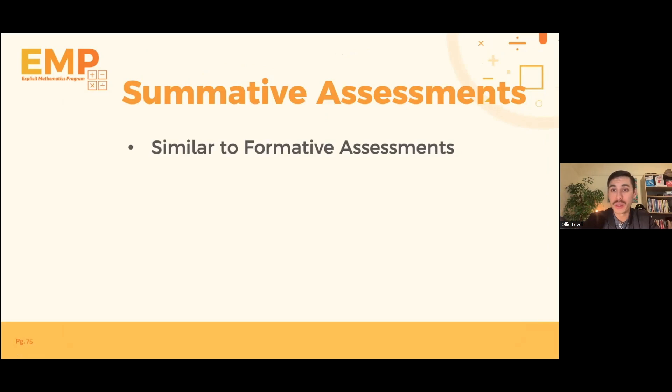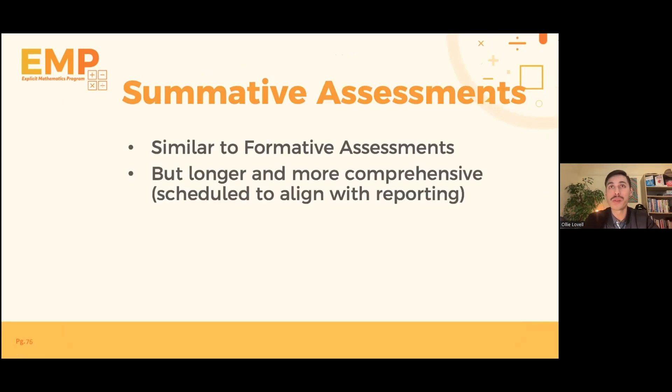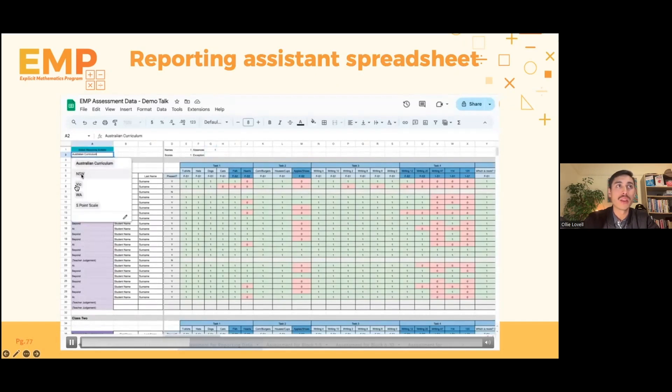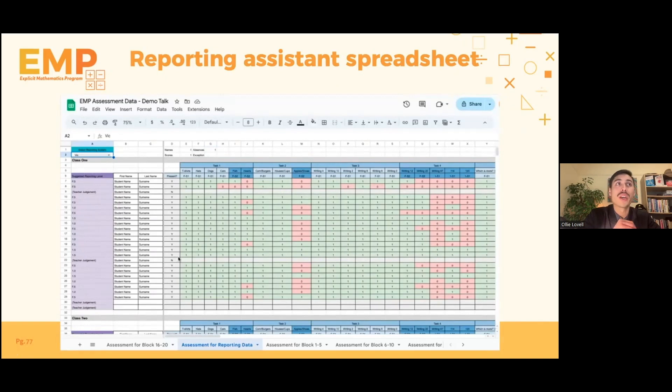What about summative? Well, summative look very similar to formative assessments, but they're just longer and more comprehensive. And we've ensured that they're scheduled to align with the natural reporting times within Australian primary schools. And we assist with that reporting with our reporting assistant spreadsheet. So this is very similar to the formative assessment one. You put in all your students' names. It's going to enter the ones there. You then just enter your zeros, and then you select which curriculum you've been using. You can see the options here. Say, if I choose the New South Wales curriculum. And for every single student, it's going to give an automatic suggested reporting level.